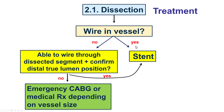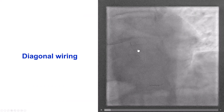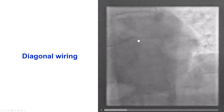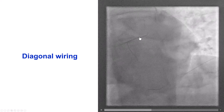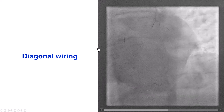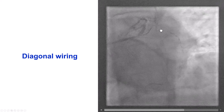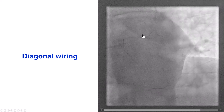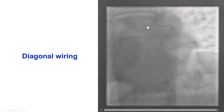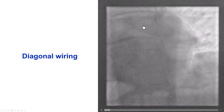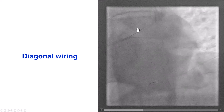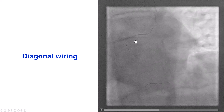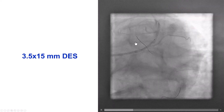We did have a wire in the vessel, and therefore the treatment is to place a stent. However, because the diagonal was within the area of dissection and we didn't want to lose it, we decided to place a wire in the diagonal. Fortunately, we were able to place another workhorse wire into the diagonal branch. There was no loss of blood flow into the LAD, and the patient remained hemodynamically stable despite the proximal LAD dissection.